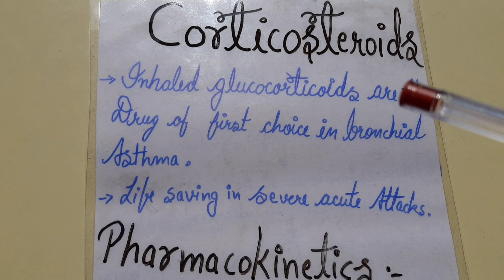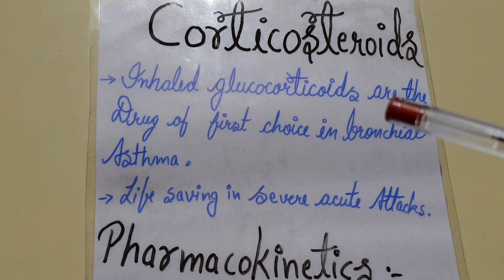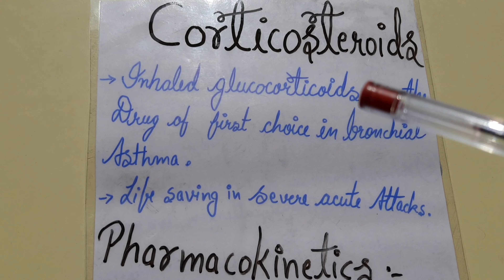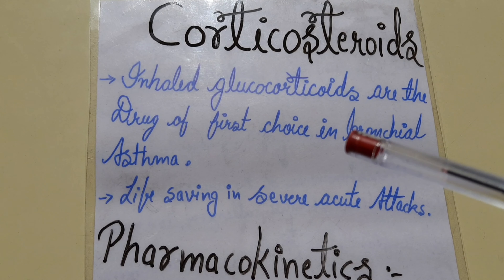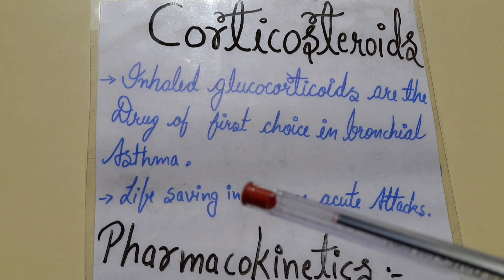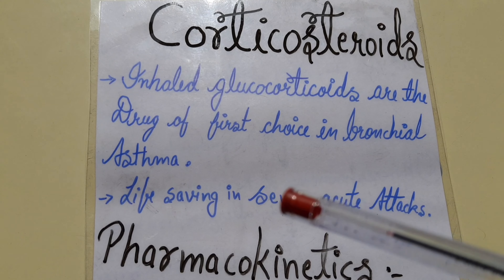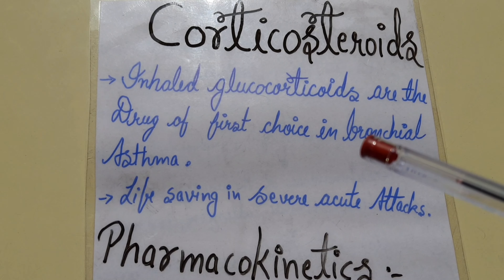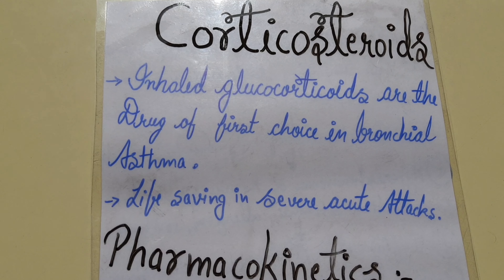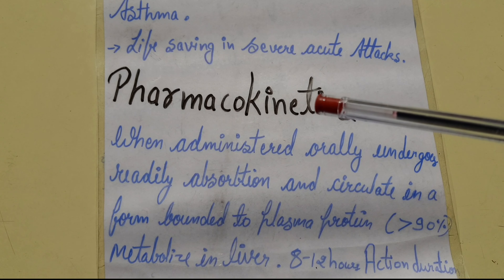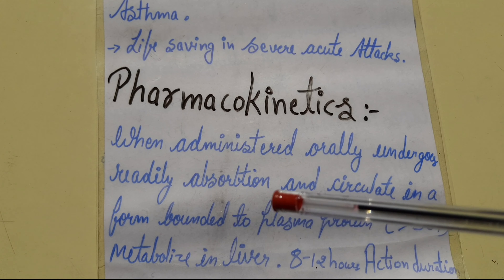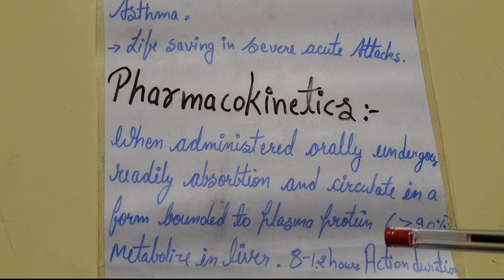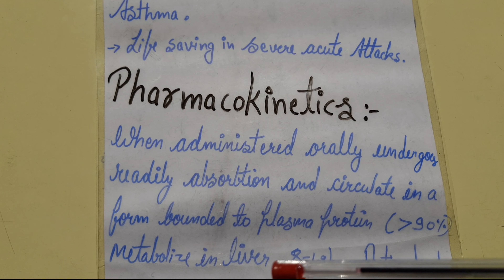Corticosteroids are a fast-acting drug class. Inhaled glucocorticoids are used in acute asthma and are life-saving in severe acute attacks. Inhaled glucocorticoids are the drug of first choice in bronchial asthma.